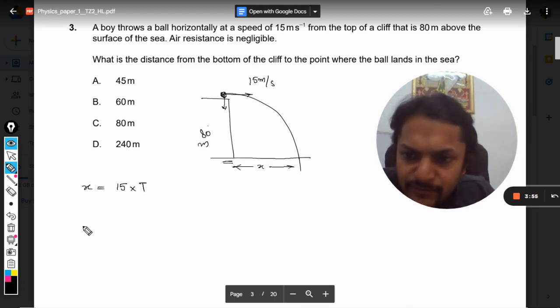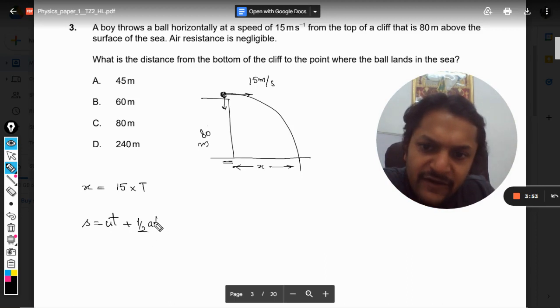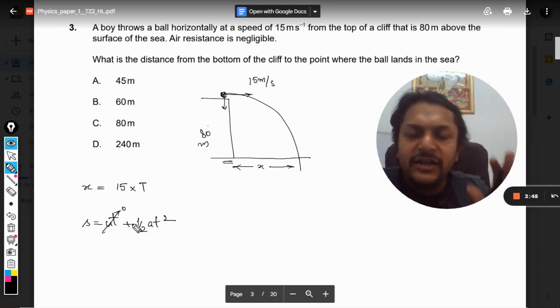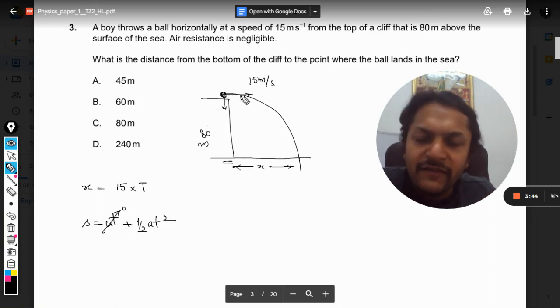Now u for the vertical case will be taken as zero. Vertically it is not falling initially - it is only having horizontal velocity, so vertically the velocity is zero. So this term is going to be zero.